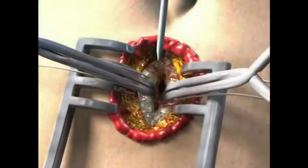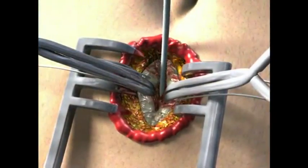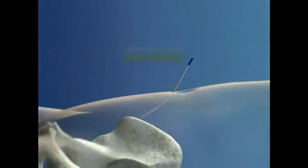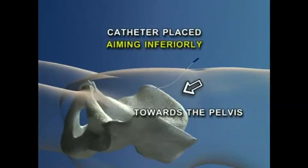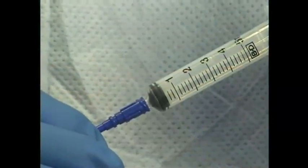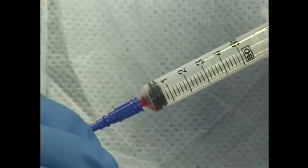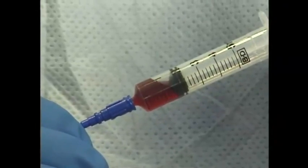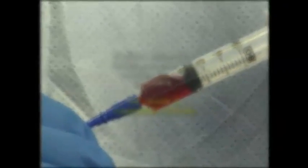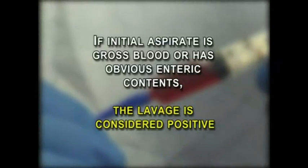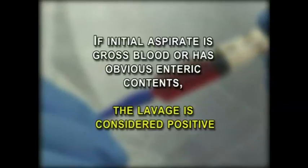The peritoneal lavage catheter is then placed into the abdomen, aiming inferiorly towards the pelvis. A syringe is attached to the catheter initially to allow for the initial aspiration of any blood or abdominal fluid. If the initial aspirate is gross blood or has obvious enteric contents, the lavage is considered positive.